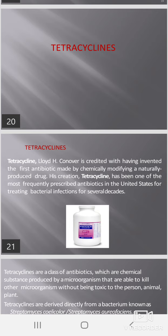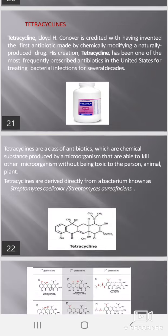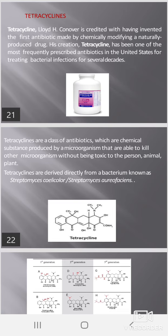Tetracycline: Lloyd H. Conover is credited with having invented the first antibiotic made by chemically modifying a naturally produced drug. His creation, tetracycline, has been one of the most frequently prescribed antibiotics in the United States for treating bacterial infections for several decades. Tetracyclines are a class of antibiotics — chemically produced substances by a microorganism that are able to kill other microorganisms without being toxic to the person, animal, or plant.